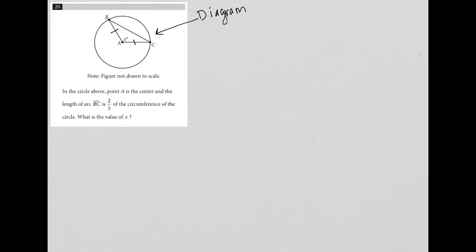So let's read it. The question says in the circle above point A is the center and the length of arc BC is two fifths. I'm gonna write that in. So this is two fifths of the circumference of the circle. So this is actually two fifths C, two fifths of the circumference.